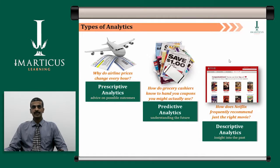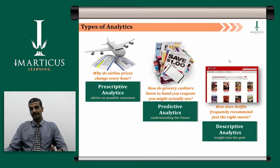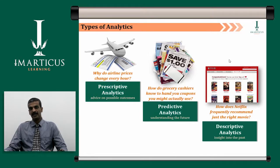For prescriptive analytics, consider why airline prices change every hour. Airline companies identify peak hours where the maximum number of passengers travel — during weekends, the start of the week, or prime times like evening or morning. They understand the travel patterns of passengers and accordingly price the tickets. They vastly use prescriptive analytics to understand customer and passenger behavior and charge accordingly.